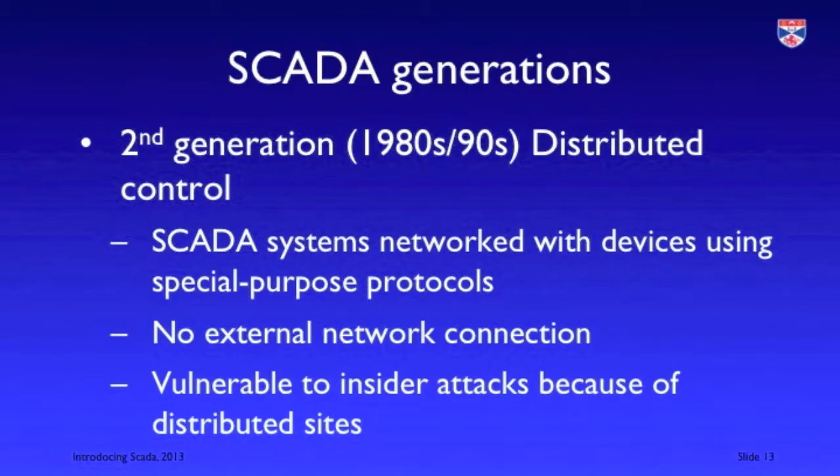The second generation of SCADA systems were networked, but they used particular industrial control protocols, so we could have a distributed system with the PLCs spread over an area, connected via these special-purpose protocols to the SCADA system. These protocols were not widely known. The systems were a bit less secure simply because they were networked, but operators were relatively confident in their security because of the difficulties in penetrating these industrial control networks.